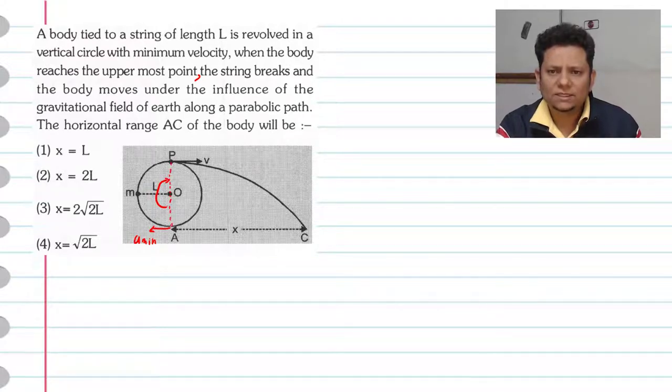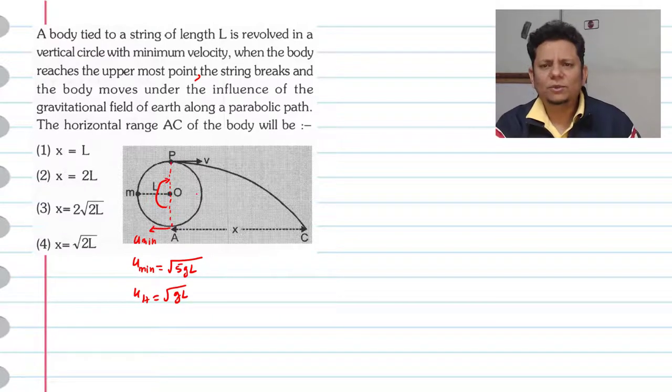This is the scenario. Now we know in theory, U minimum at the lowest point is root 5GL, where L is the length. When you reach the highest point, then U at the highest point is root GL. This is the theory.